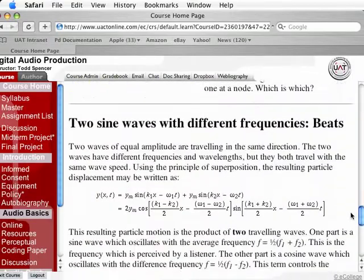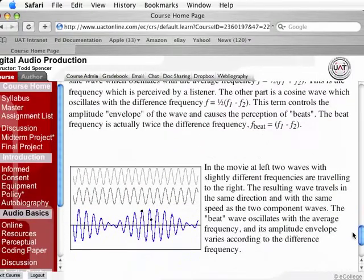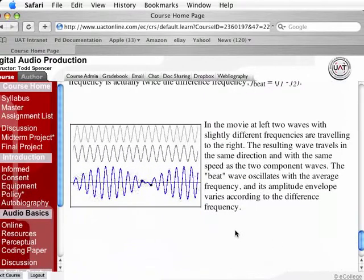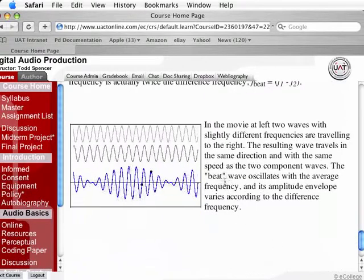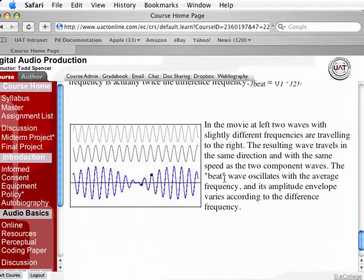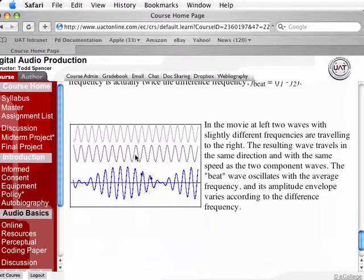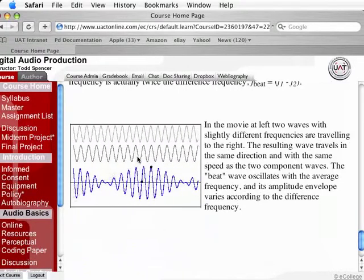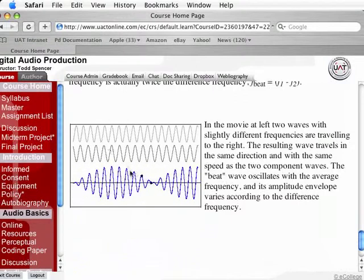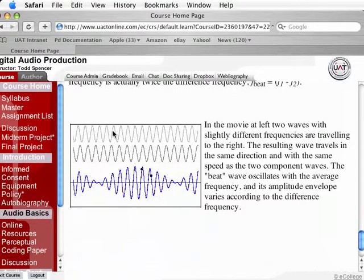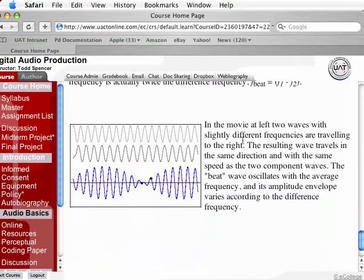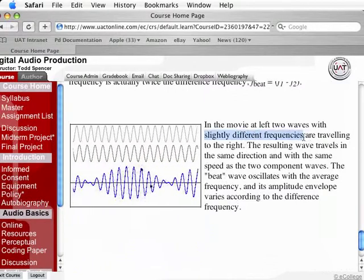Another illustration of phase cancellation is a phenomenon known as beats, and the reason that it's called beating is because it has a wah-wah-wah type effect. There's two waves, represented by the gray waves on top, and the blue wave at the bottom is the resulting wave. Now, these two waves, as you can see just visually, are very close in frequency, although they're not exactly the same. They have slightly different frequencies.